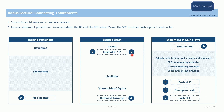Each financial statement tells a different aspect of a company's financial story, but they make much better sense when seen all together. We've covered the theory of the interrelation among the three financial statements — the income statement, the balance sheet, and the statement of cash flows. Please keep in mind that we will practically link these three financial statements in section 10 when we build a full three-statement financial model.